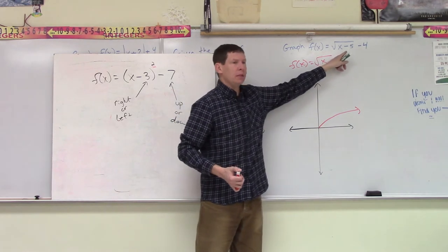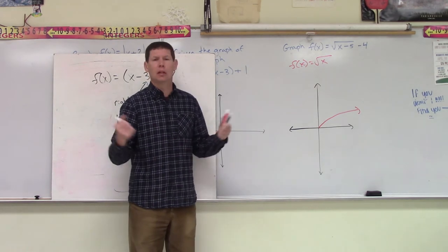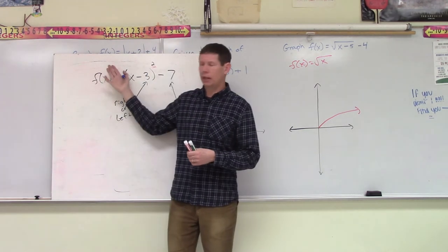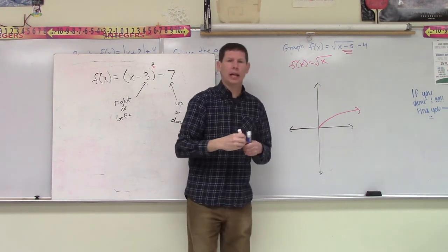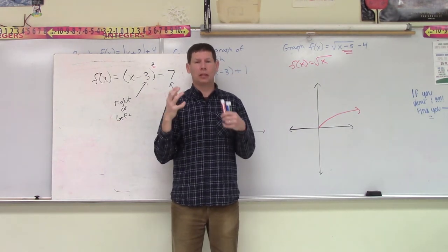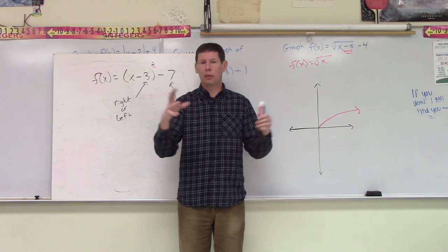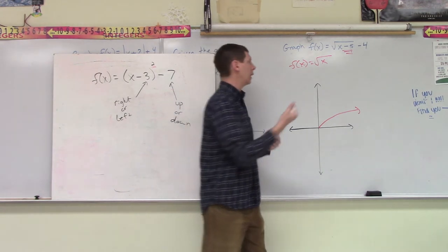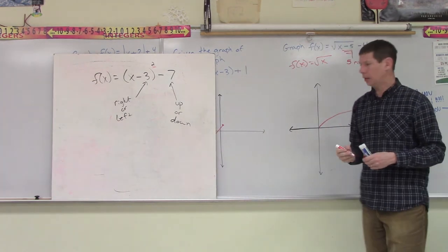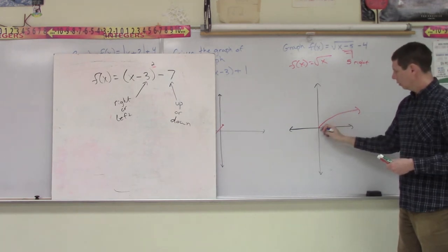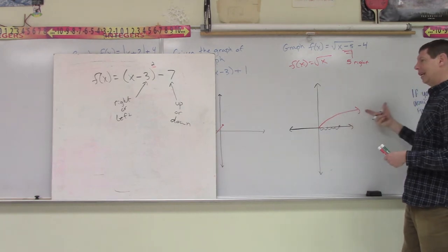Now, what happens if we want to graph this function f(x) equals the square root of x minus 5 minus 4? Well, just like our absolute value function, just like our quadratic function, what we first want to take note of is within that square root, or within the function, we have something added or subtracted to our x. In this case, we have a minus 5. So that's going to tell us, remember, we do the opposite of what's in the function. Now that's going to tell us we're moving 5 to the right. So the first thing I'm going to do here is go 1, 2, 3, 4, 5. So we've taken this whole curve and shifted 5 down.